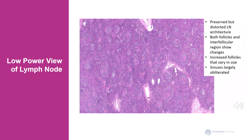This is a low power view of a lymph node involved by the hyaline vascular variant of Castleman disease. The lymph node has overall preserved but distorted architecture. What's immediately noticeable is that you have increased follicles, which vary in size and many are small. Sinuses, which are typically open, are typically obliterated here, or largely obliterated.